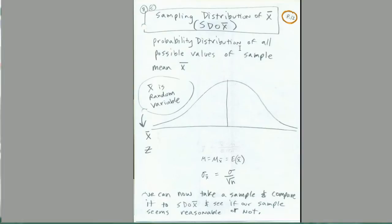It is just the probability distribution of all possible values of sample mean x̄. We have the entire list of x̄s, so we can plot them and look at the distribution. This is our normal curve — if we plot a histogram and it looks bell-shaped, then we're allowed to use the normal distribution. Now, x̄ is our random variable, and we're going to have a mean and a standard deviation for this sampling distribution of x̄.